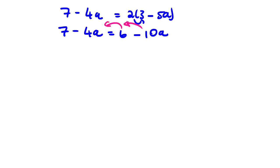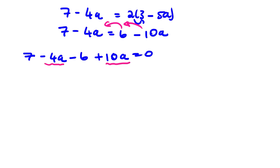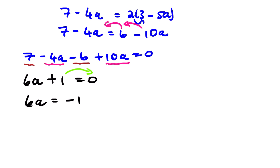We must equate everything to 0, so we transpose terms to the other side. We have 7 minus 4a; transposing 6 gives negative 6, and transposing negative 10a gives positive 10a, equals 0. Looking at like terms: 10a minus 4a is 6a. Then 7 minus 6 equals 1, so 6a plus 1 equals 0. Transposing gives 6a equals negative 1. Dividing both sides by 6, a equals negative 1 over 6.